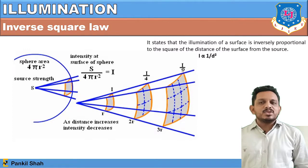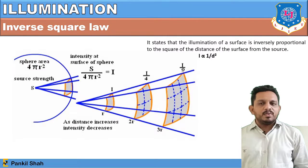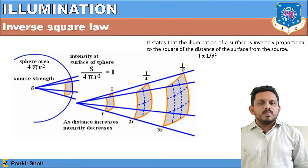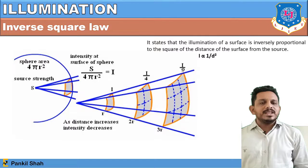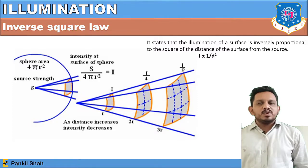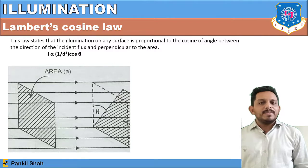In the diagram, the source gives light and the sphere area is 4πr². The intensity at the surface of a sphere is S / (4πr²). As distance increases, illumination decreases inversely with the square of the distance. At distance 2r, illumination decreases by a factor of 4; at distance 3r, it decreases by a factor of 9.